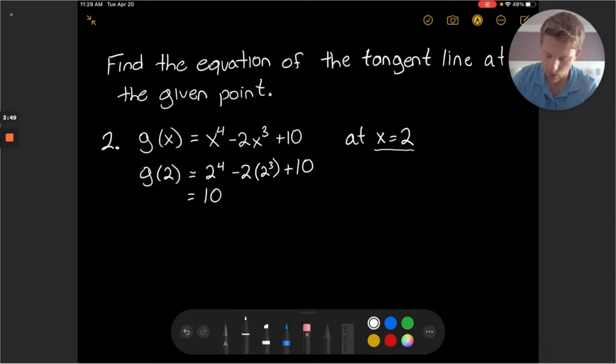So the next thing we might want to look for is g prime of x and then evaluate that at 2. So the derivative of our g function is 4x cubed minus 2 times 3 is going to get 6x squared, and then the constant will be 0. Now we can evaluate this at the value x equals 2.